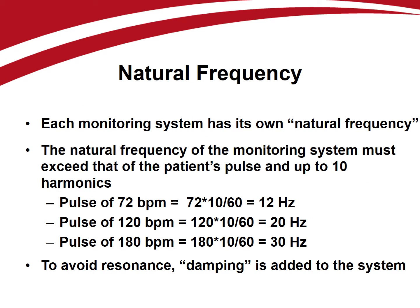A monitoring system has its own natural resonant frequency, which must differ from the fundamental and harmonic frequencies seen in the blood pressure waveform. Otherwise, the monitoring system will resonate, the measured pressure waveform will be distorted, and the pressures measured will be exaggerated. The natural frequency of the measuring system must therefore exceed the natural frequency of the arterial pulse in order to determine changes in blood pressure quickly and accurately. For example, to accurately measure a heart rate of 120 beats per minute, the monitoring system must be able to sample the pulse at more than 20 hertz, or 20 times per second. To prevent the measuring system from resonating due to harmonics, damping is added to improve data accuracy.